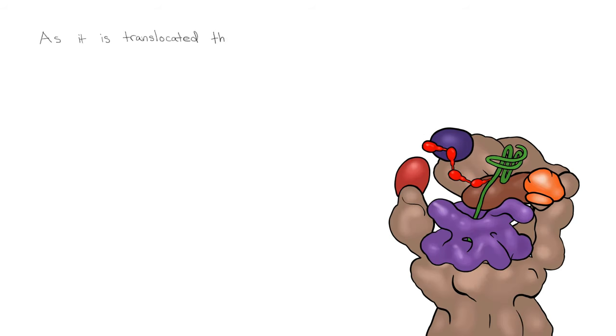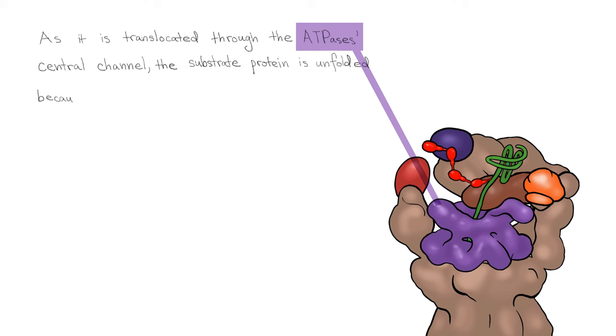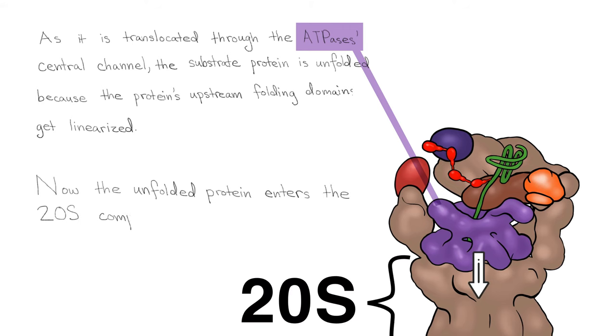As it is translocated through the ATPase's central channel, the substrate protein is unfolded because the protein's upstream folding domains get linearized. And now the unfolded protein enters the 20S compartment.